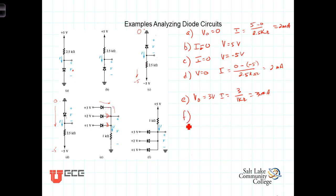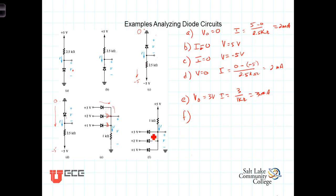Finally, example F is very similar to part E, with some differences. We have a positive 5 volts going through the 1 kilohm resistor, so the resistor is tied to 5 volts rather than ground. Also, the diodes are pointing in the opposite direction. Using the same logic, all three diodes cannot be on simultaneously — only one will be on. Let's assume the 3-volt diode is conducting: that would put 3 volts at the node, which would forward bias the 2-volt diode as well. So this assumption fails — the 3-volt diode is not conducting.